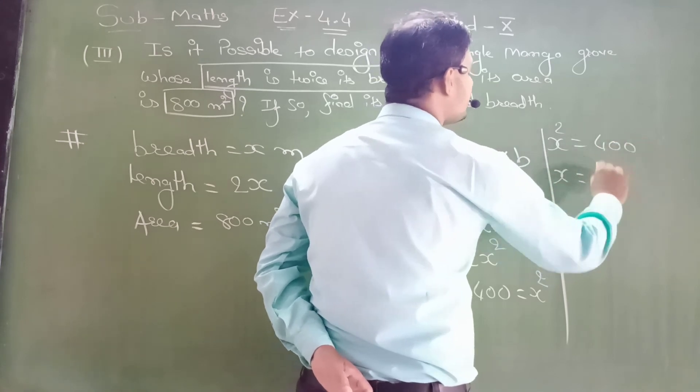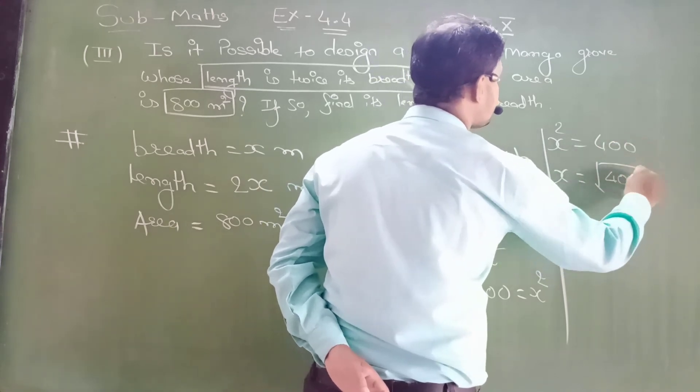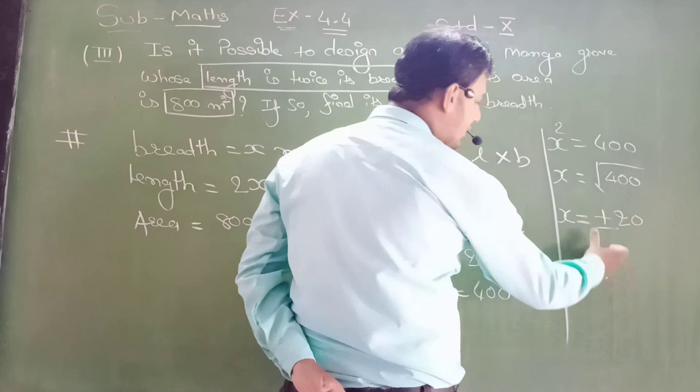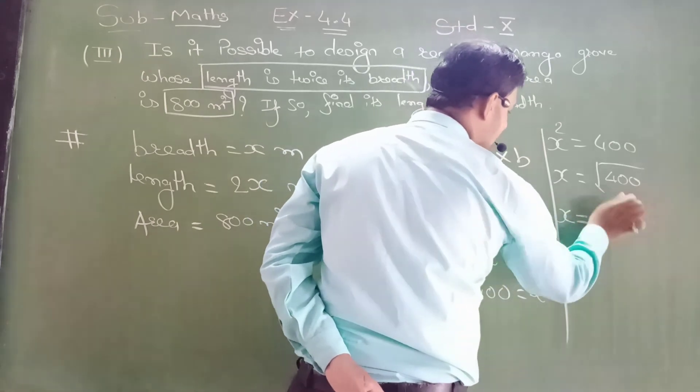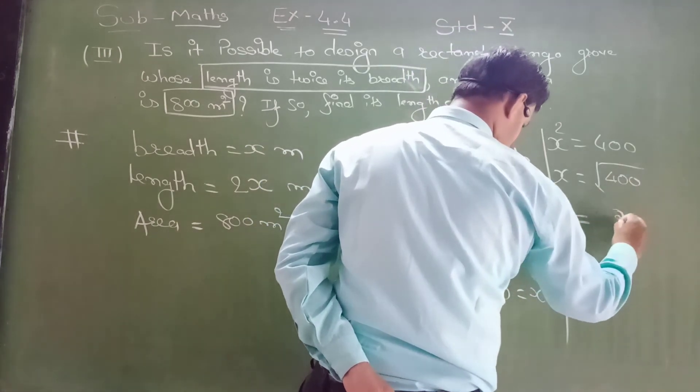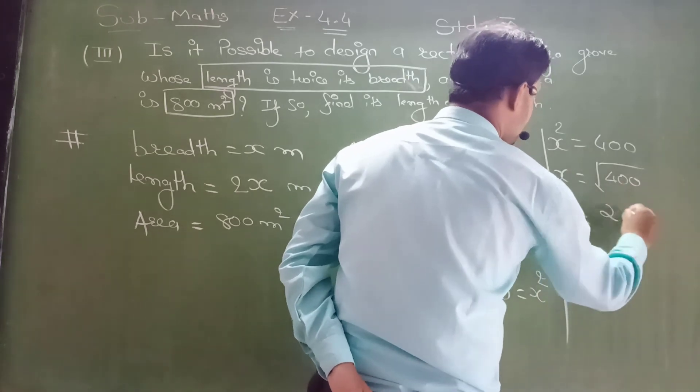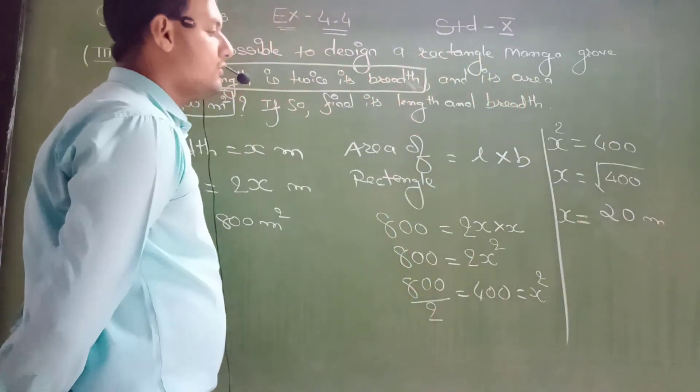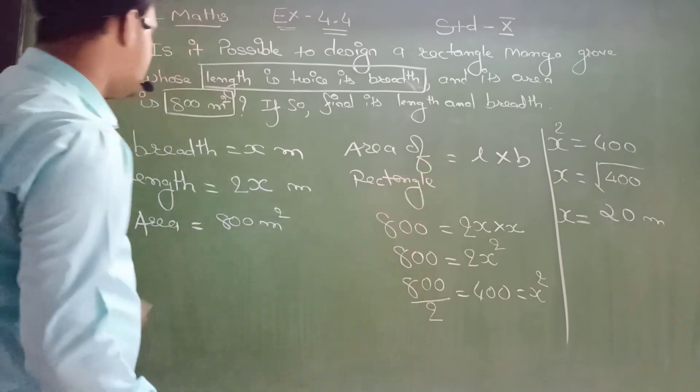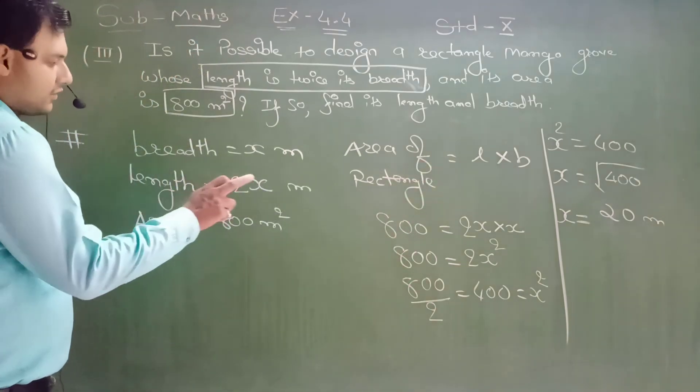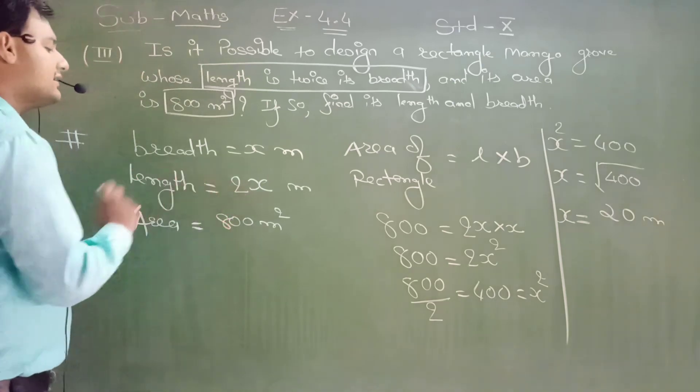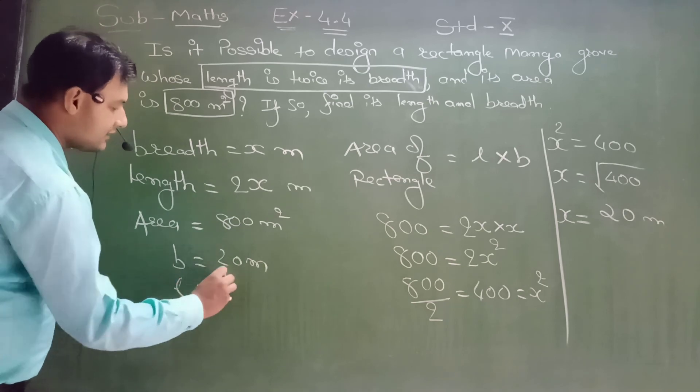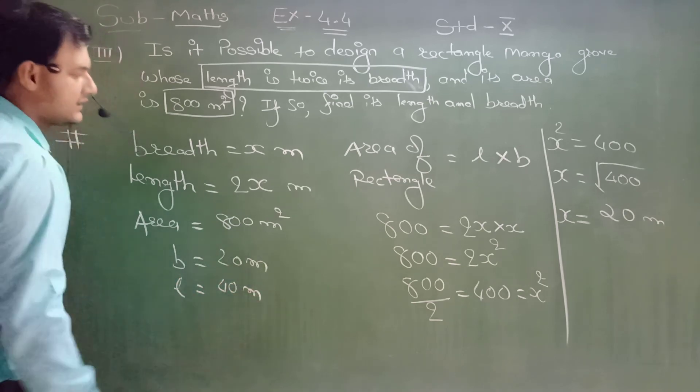Area equals length × breadth. So 2x × x equals 800. 2x² equals 800. x² equals 400. x equals √400, which is ±20. Negative breadth cannot exist, so it is positive. Now please see here, breadth is 20. And length is 2x. So, dear students, breadth equals 20 meter and length equals 40 meter.